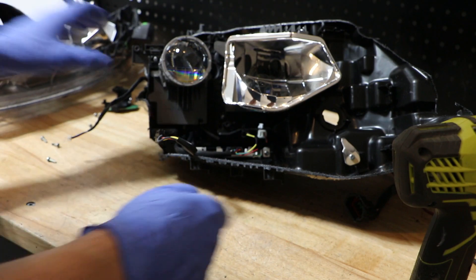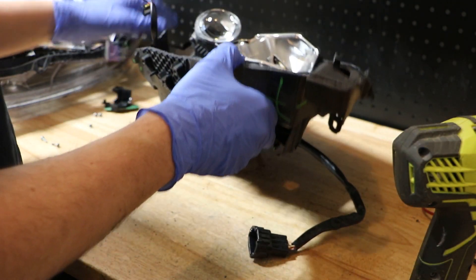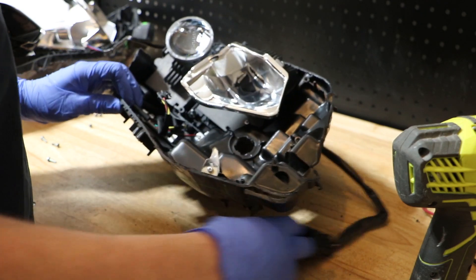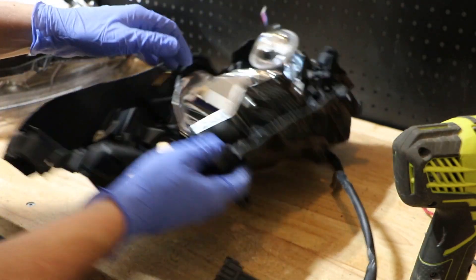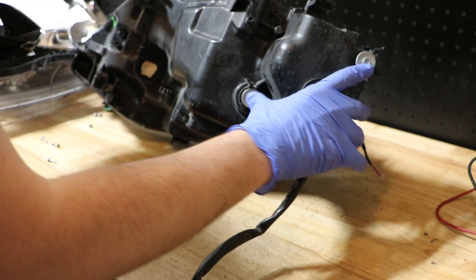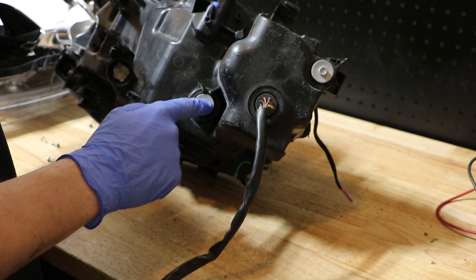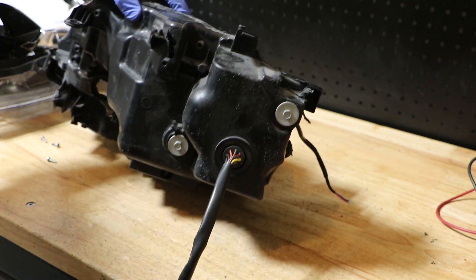We have that shroud removed. At this point we need to go to the rear of the housing and we need to loosen the headlight adjusting bolts.